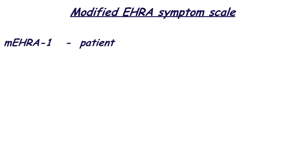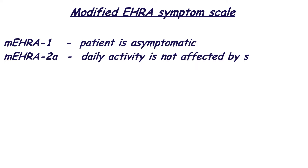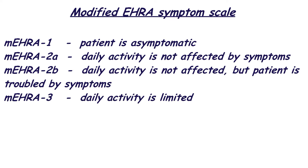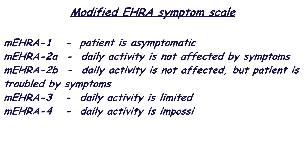There is the modified European Heart Rate Association Symptom Scale, also called EHRA. EHRA 1 means the patient is asymptomatic. If the patient's normal daily activity is not affected, there is EHRA 2, subdivided into 2A and 2B, depending on whether the patient is troubled by symptoms. EHRA 3 means the patient's normal daily activity is limited. If the patient is disabled and usual daily activity is impossible, doctors should note EHRA 4.